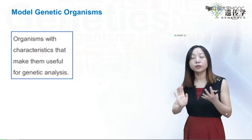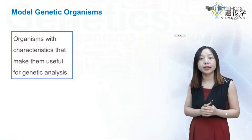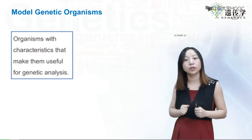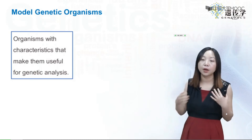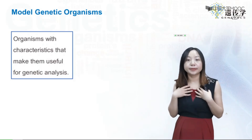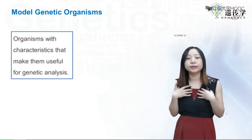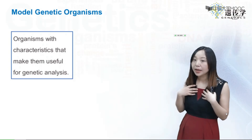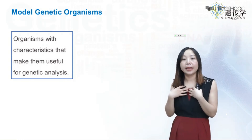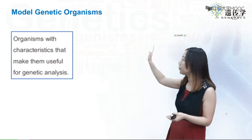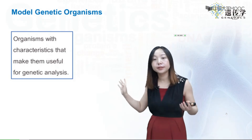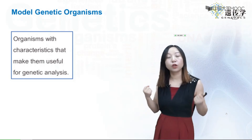The good thing is that all living organisms share the same genetic system. That means if we want to know the function of a particular human gene, we don't need to study that human gene directly. We can study similar genes in other organisms, and that knowledge can help us understand the similar human gene. That's the basis for using model genetic organisms to understand gene function and the relationship between genotype and phenotype.